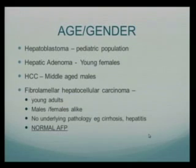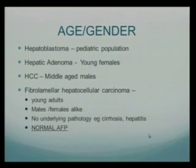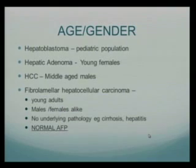With regards to age and gender, if you have a pediatric patient who got a CAT scan for whatever reason — be it trauma or otherwise — and they see a liver lesion, the first diagnosis that should come to your mind is hepatoblastoma. Usually these will be large, and that's the most common liver malignancy in the pediatric population.